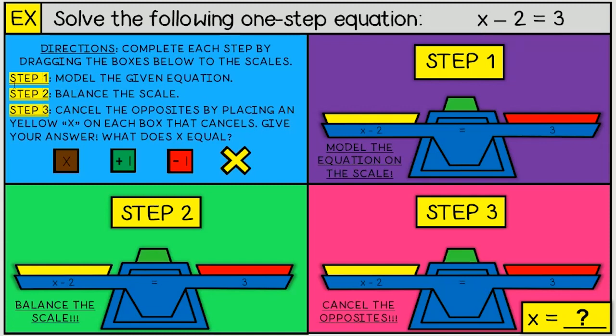I am going to solve this problem by starting with step 1. Step 1 says model the given equation. In order to model the equation on the scale, I am going to bring over x minus 2 on the left side. So I'm going to come over here and drag over x. I am going to bring over two negative 1s. That is the same as x minus 2.